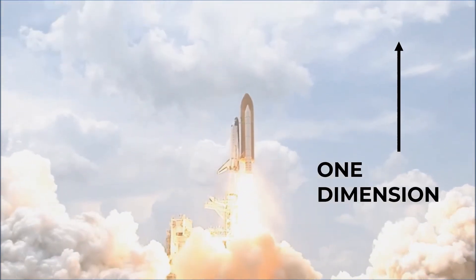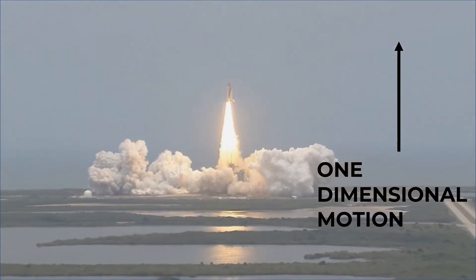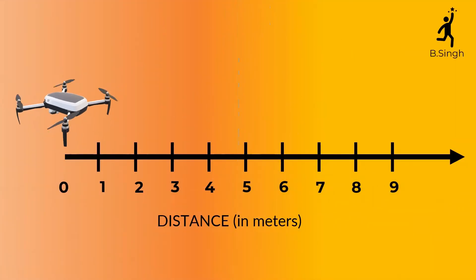We can measure the distance traveled by the object in any units, but since meters is the standard unit, we will use meters to measure the length traveled by the object. For example, if we have a drone moving along a straight line.